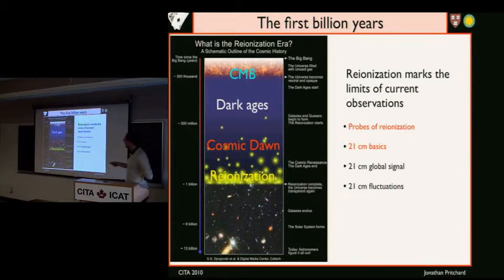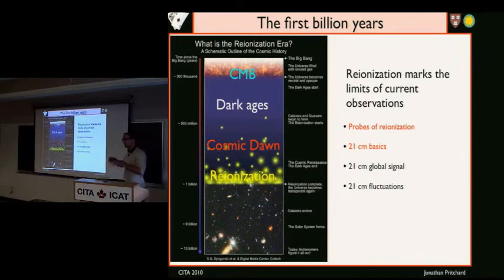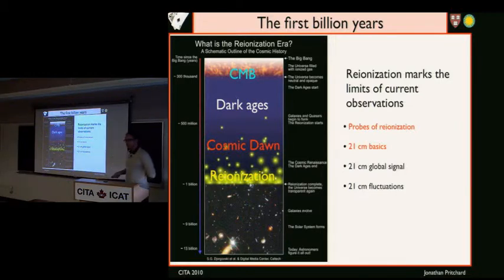We can break up this period before the end of reionization into different phases. The cosmic microwave background is pretty well observed and understood. The cosmic dark ages, where structures are growing before the first galaxies actually form. The cosmic dawn, when the very first galaxies form. And then reionization, where ionized bubbles surrounding clusters of galaxies merge, overlap, and the entire universe becomes ionized.